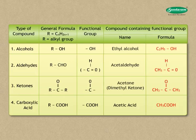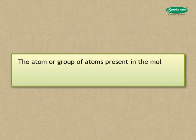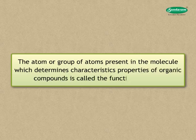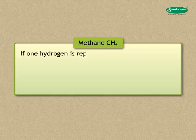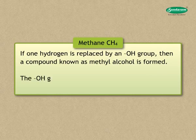The atom or group of atoms present in the molecule which determines the characteristic properties of organic compounds is called the functional group. For example, consider the hydrocarbon methane (CH₄). If one hydrogen is replaced by a -OH group, a compound known as methyl alcohol is formed. The -OH group is known as the alcoholic functional group.